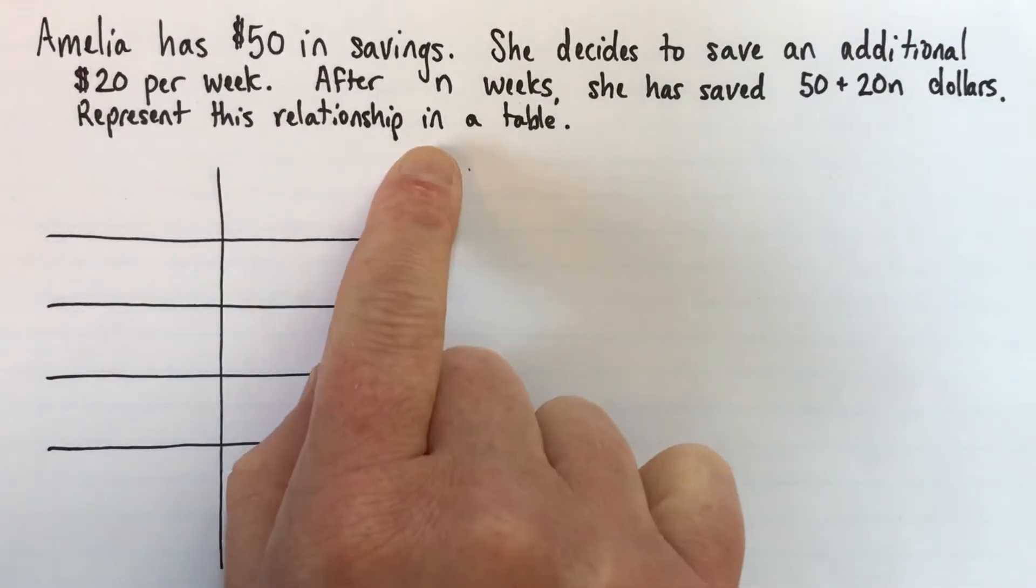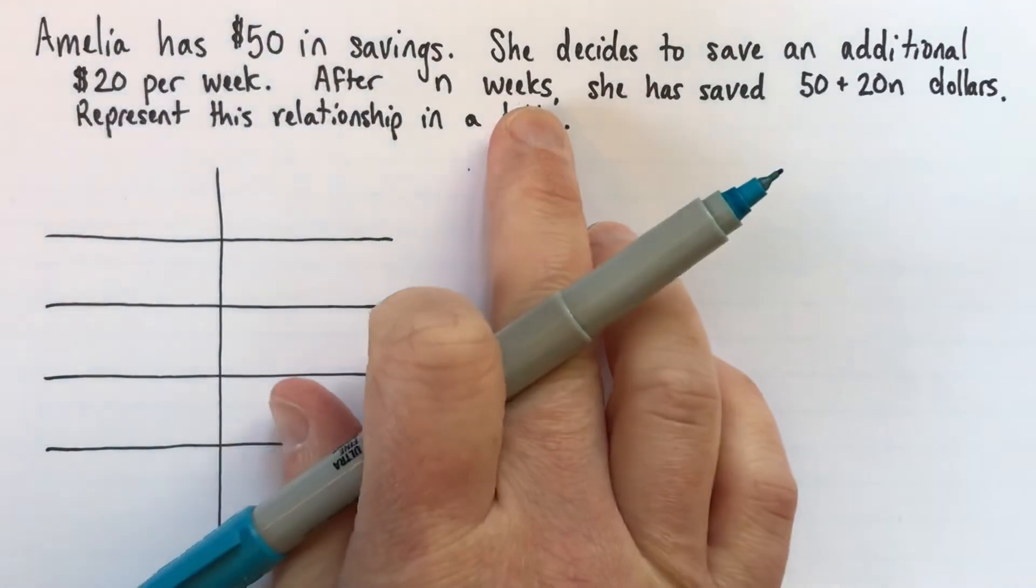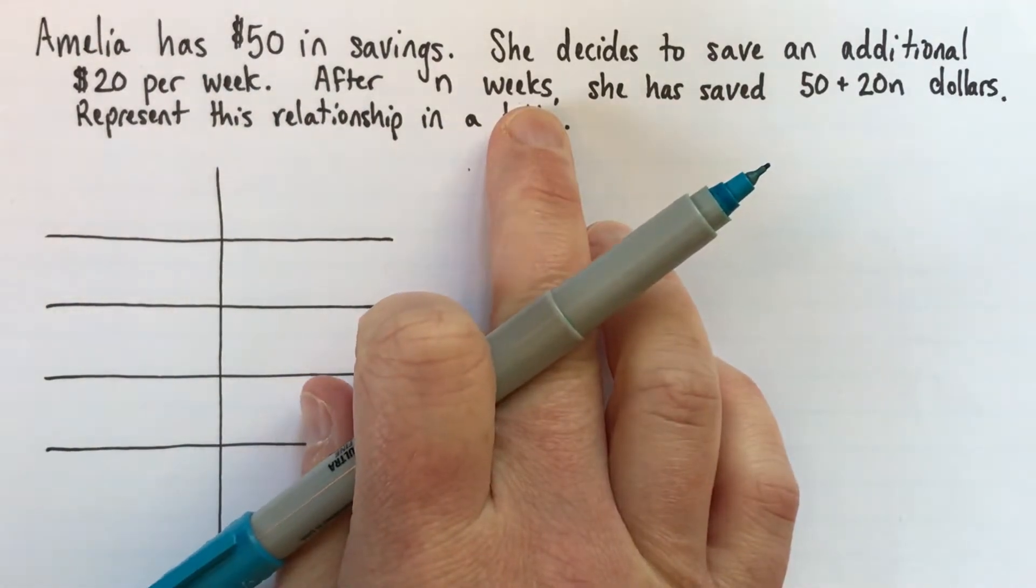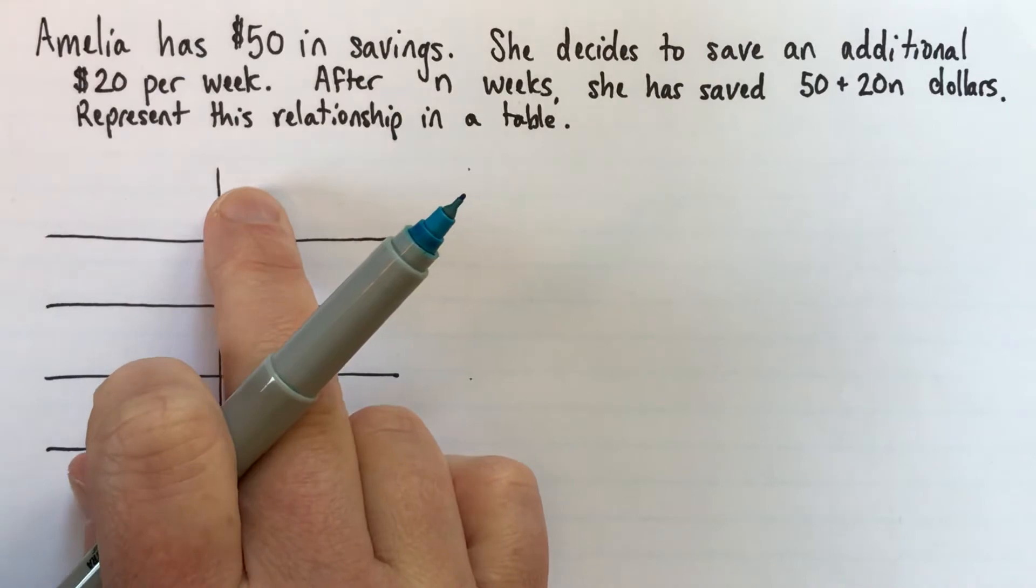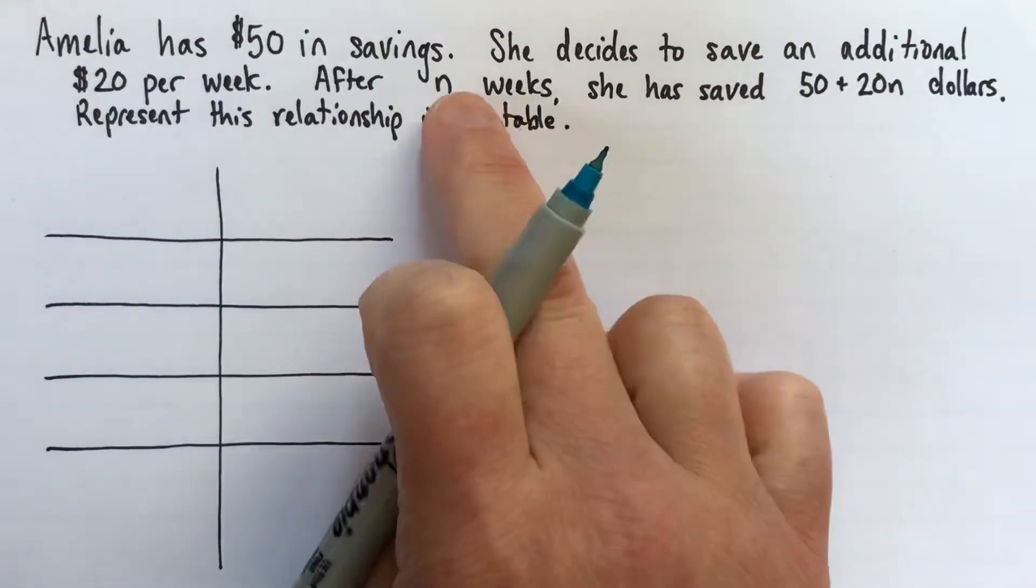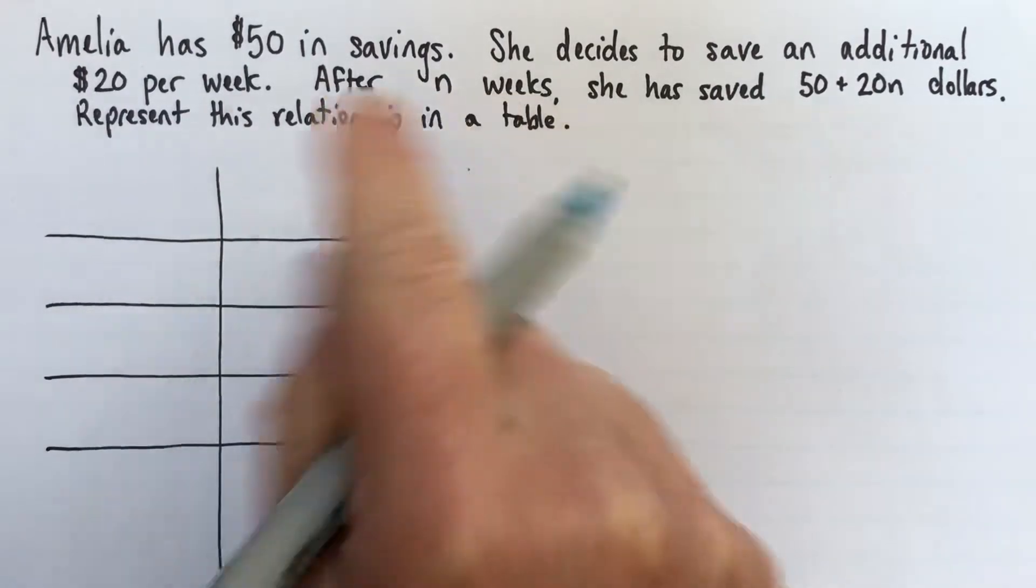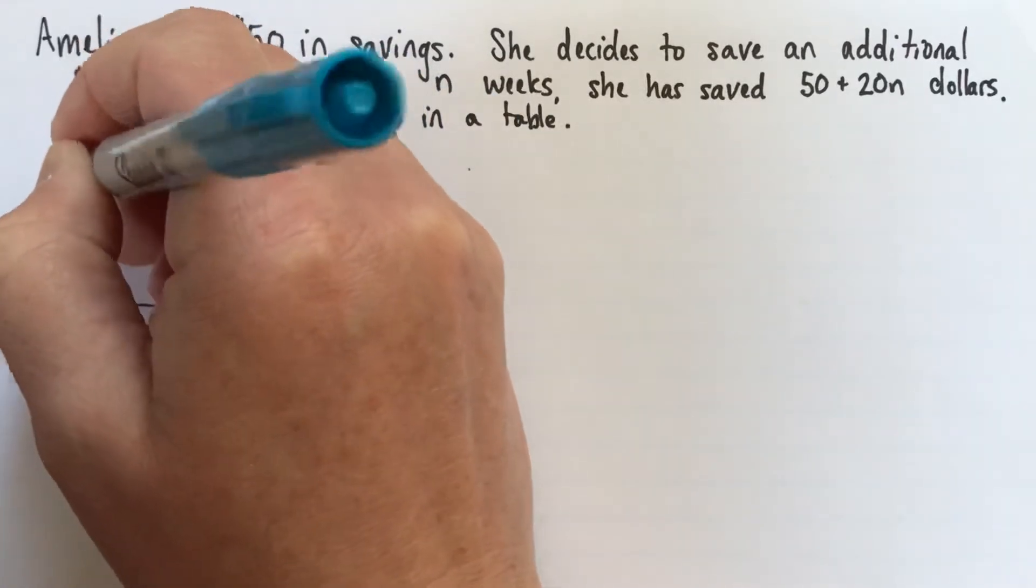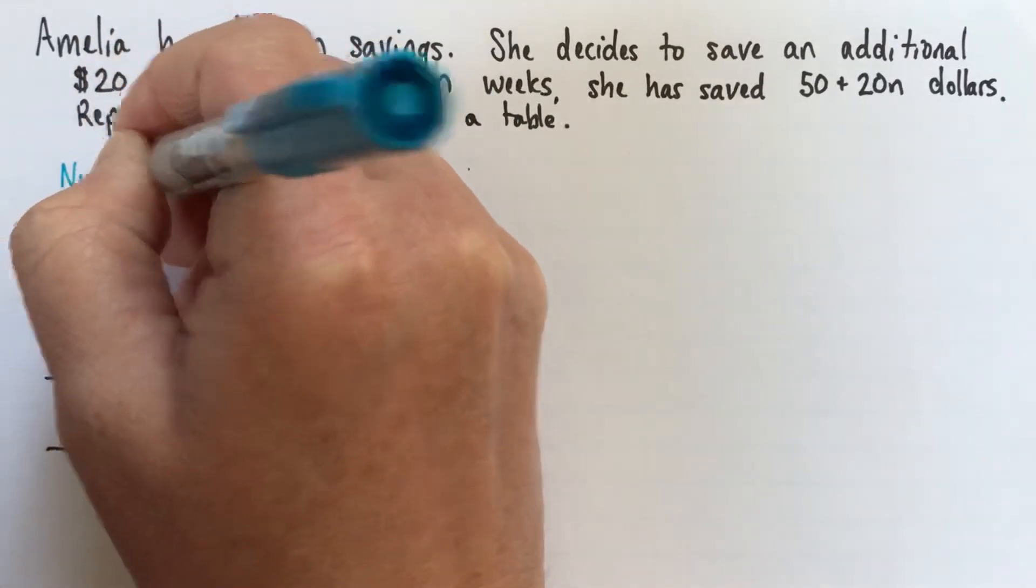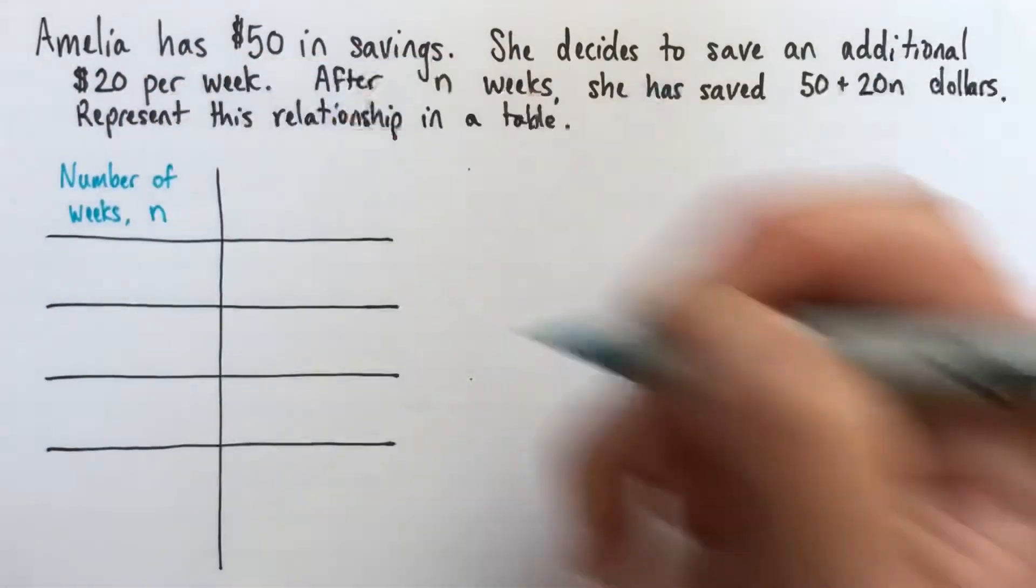So this question is asking us to represent this relationship in a table. So the first thing we want to do in our table is write titles. So in this case, because we have a little bit of the context, we know some of the story, we should include that in the table. If you don't, you could just write the words input and output. But let's do it like this. So the first thing we're going to put in our left column here is n. So this is the number of weeks. So we'll write number of weeks. And then I'll also write that that's n.